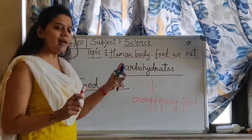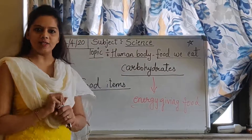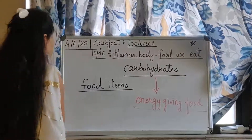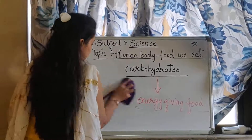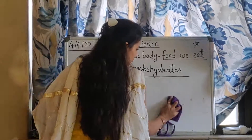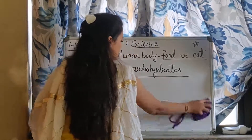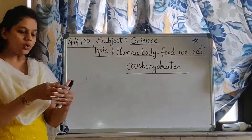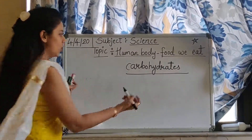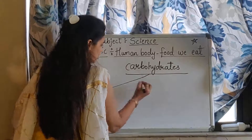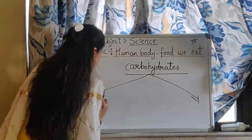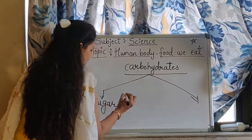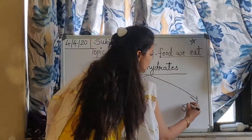Now there are two types of carbohydrates present in different food items. The two types are: sugar carbohydrates and starch carbohydrates.